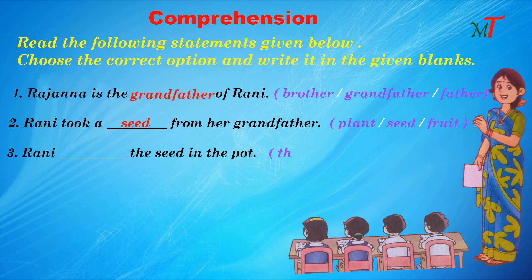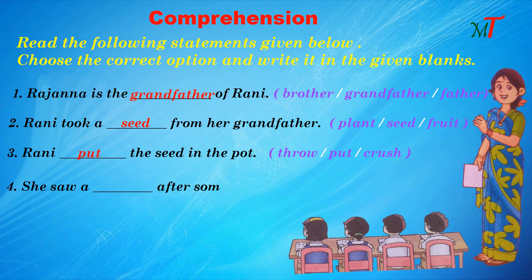Third one: Rani dash the seed in the pot. Options: Throw, Put, Crush. The correct answer is Put. So we write Put in the blank. Fourth one: She saw a dash after some days. Options: Tree, Plant, Pot. The correct answer is Plant. So we write Plant in the blank.